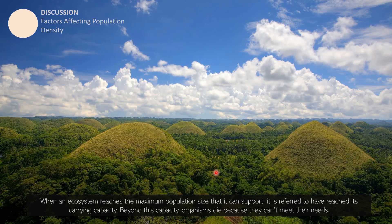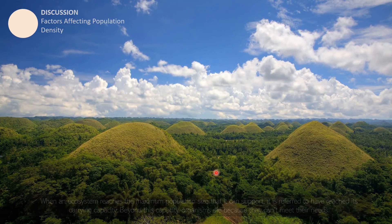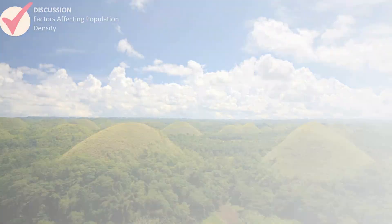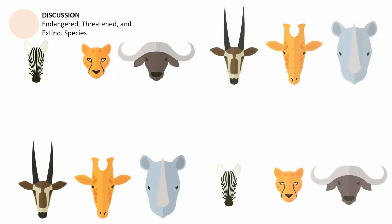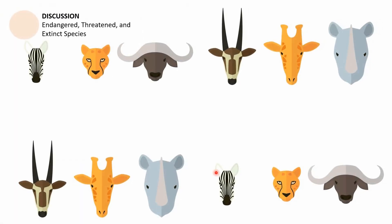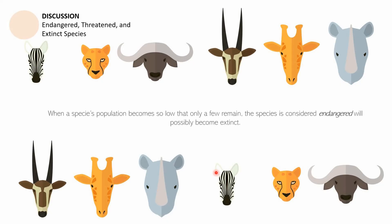Because of human presence, the carrying capacity of an ecosystem is very quickly reached. We have diverse needs and are omnivorous — we eat both plants and animals. That concludes the first part of the discussion on factors affecting population density in an ecosystem.